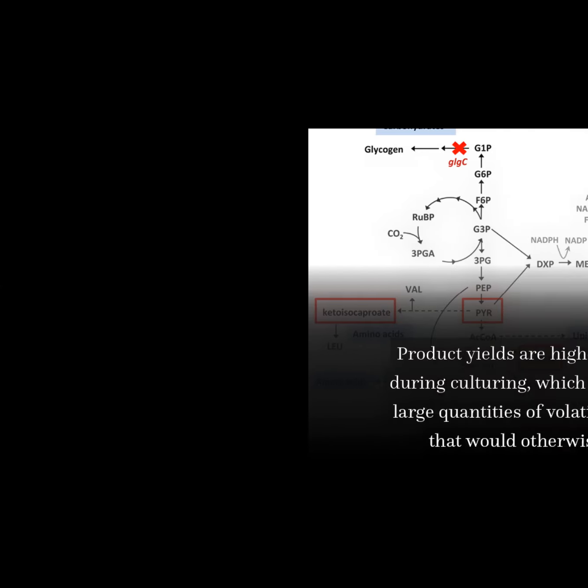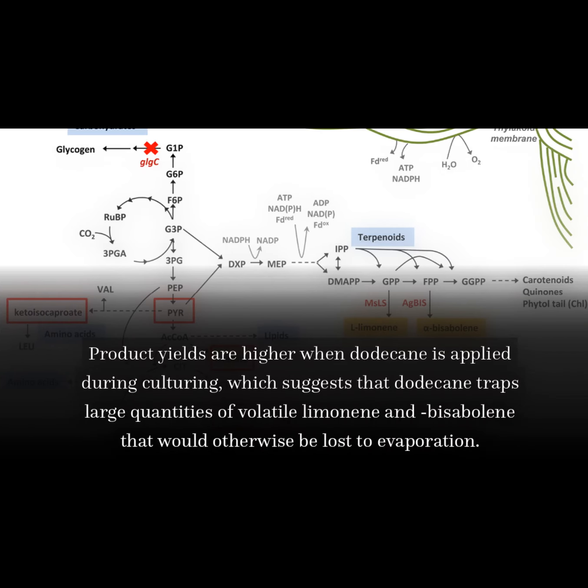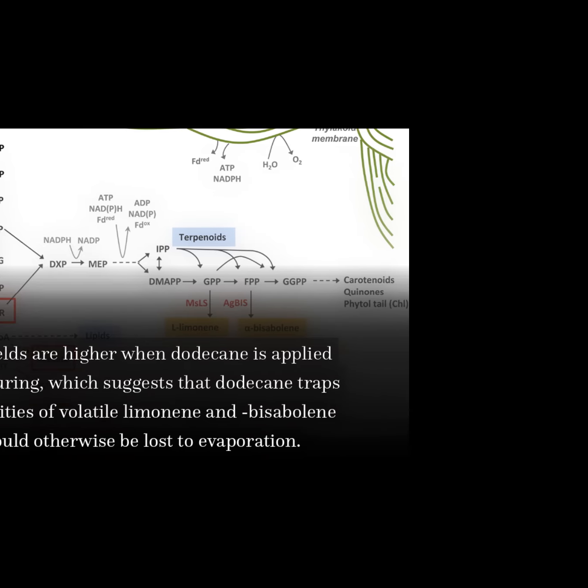Product yields are higher when dodecane is applied during culturing, which suggests that dodecane traps large quantities of volatile limonene and bisabolene that would otherwise be lost to evaporation.